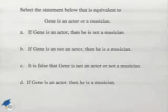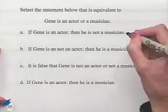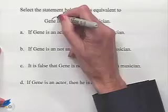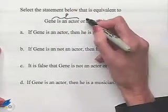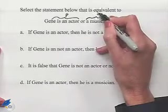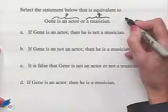Now let's decide when we have equivalent statements. Select the statement below that is equivalent to 'Gene is an actor or a musician.' Let's designate P as the statement that Gene is an actor, and we'll have the statement Q is that Gene is a musician. So this is given as P or Q.